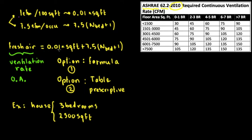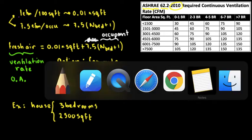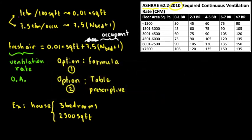The formula is basically 0.01 times the square feet plus 7.5 number of bedrooms plus 1. This number of bedrooms plus 1 is actually occupants, the number of occupants. So the number of bedrooms plus 1, in this case, is going to be equal to the following.